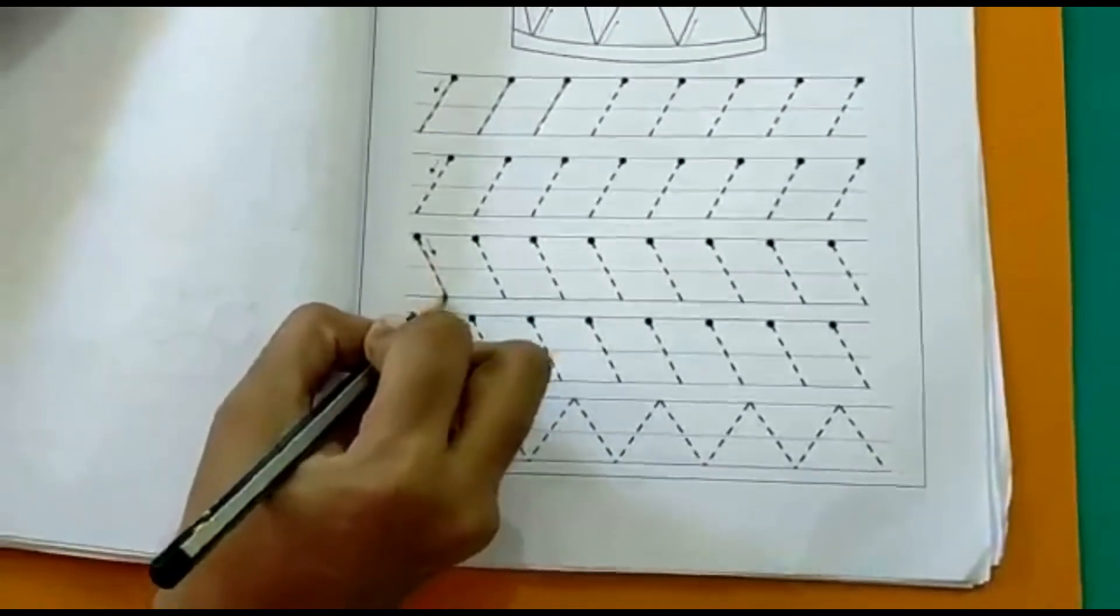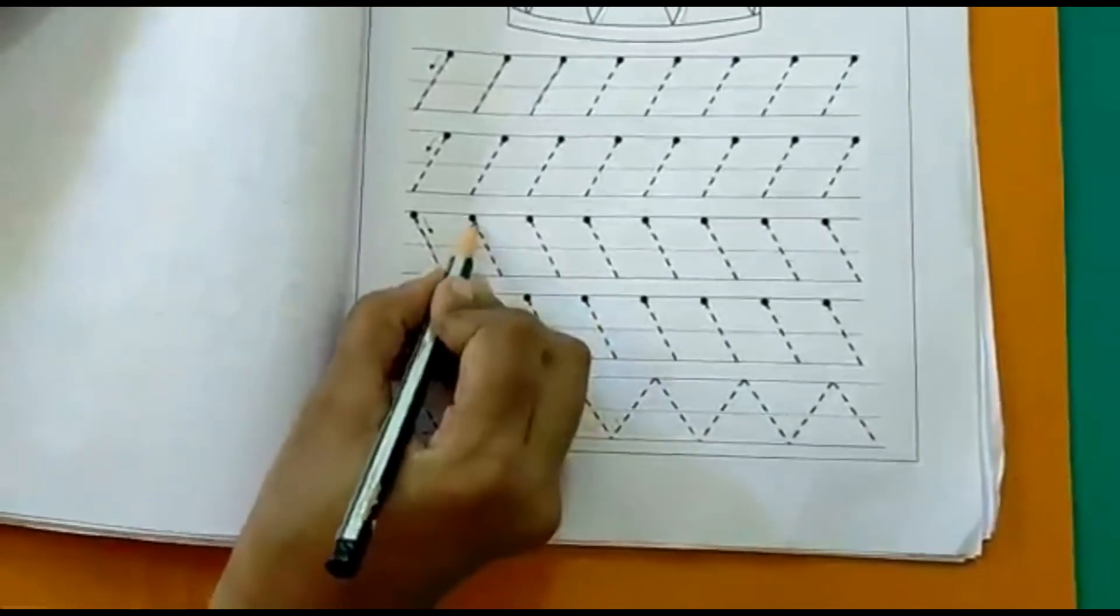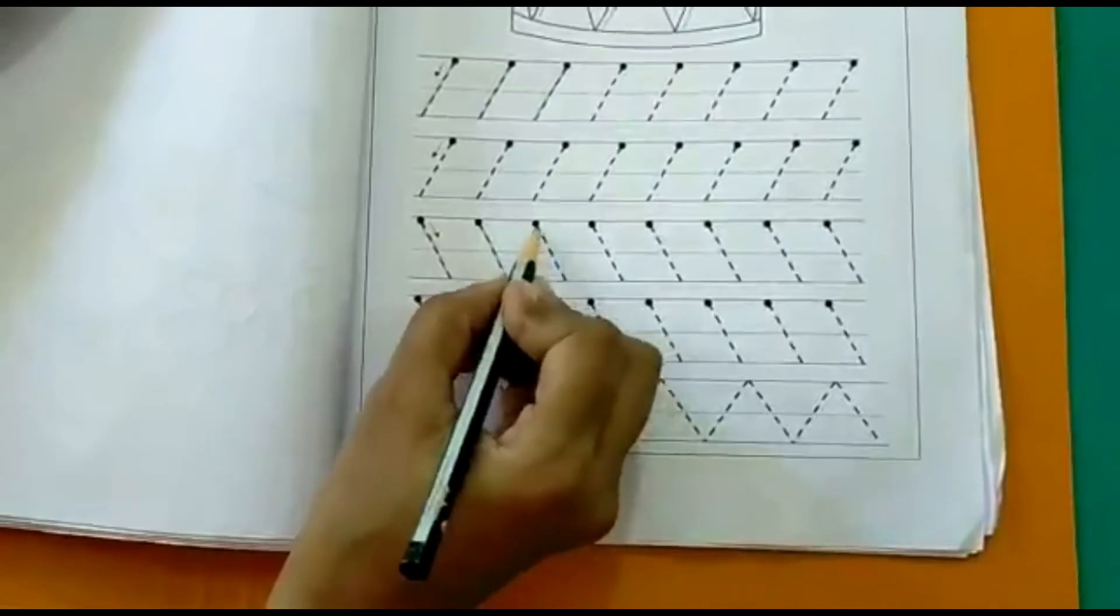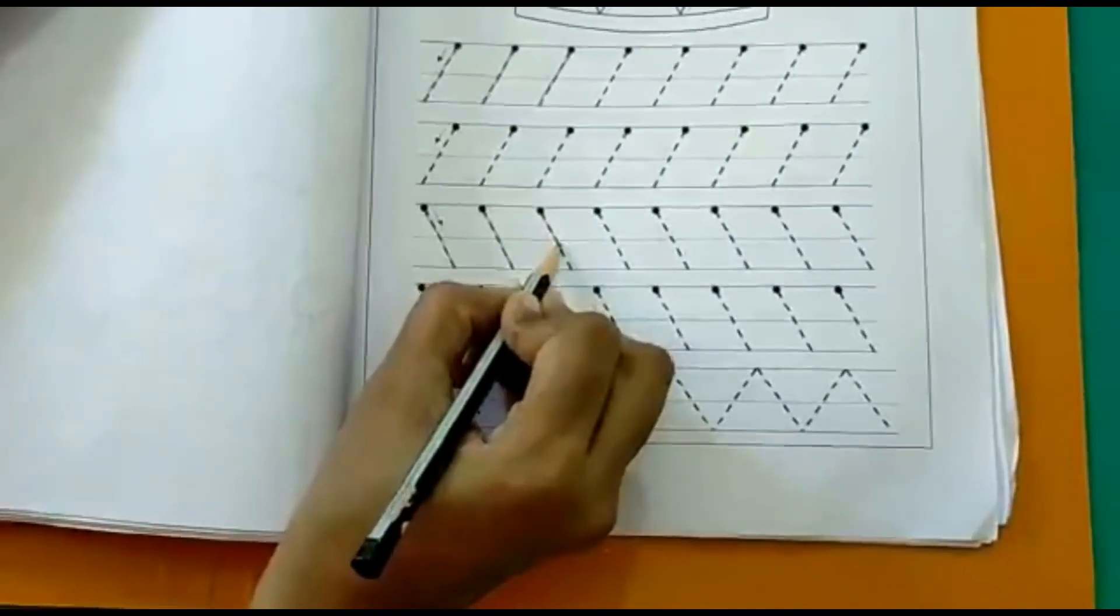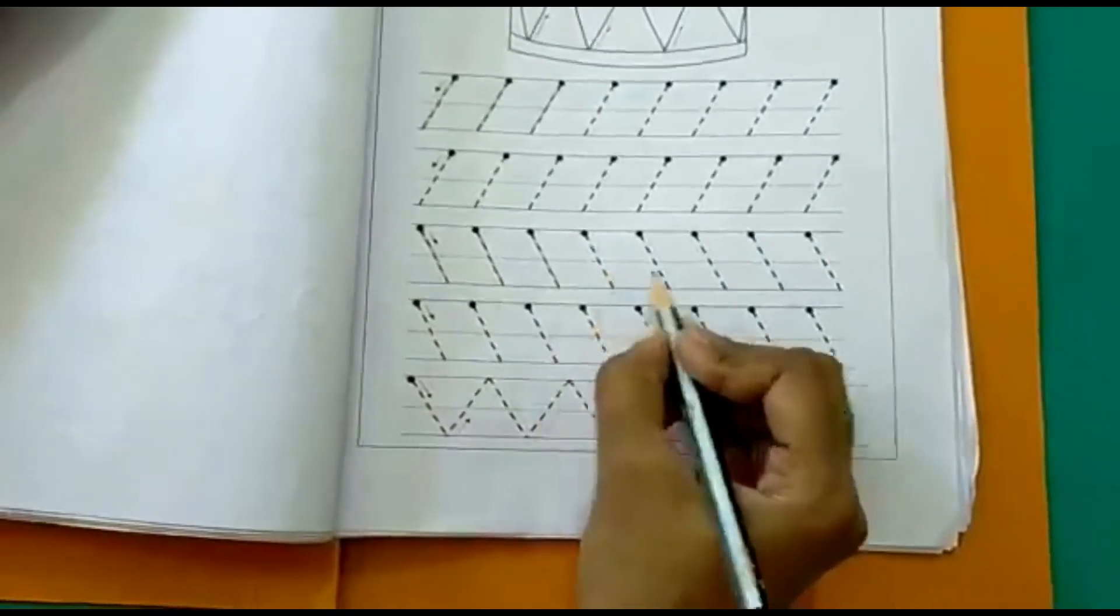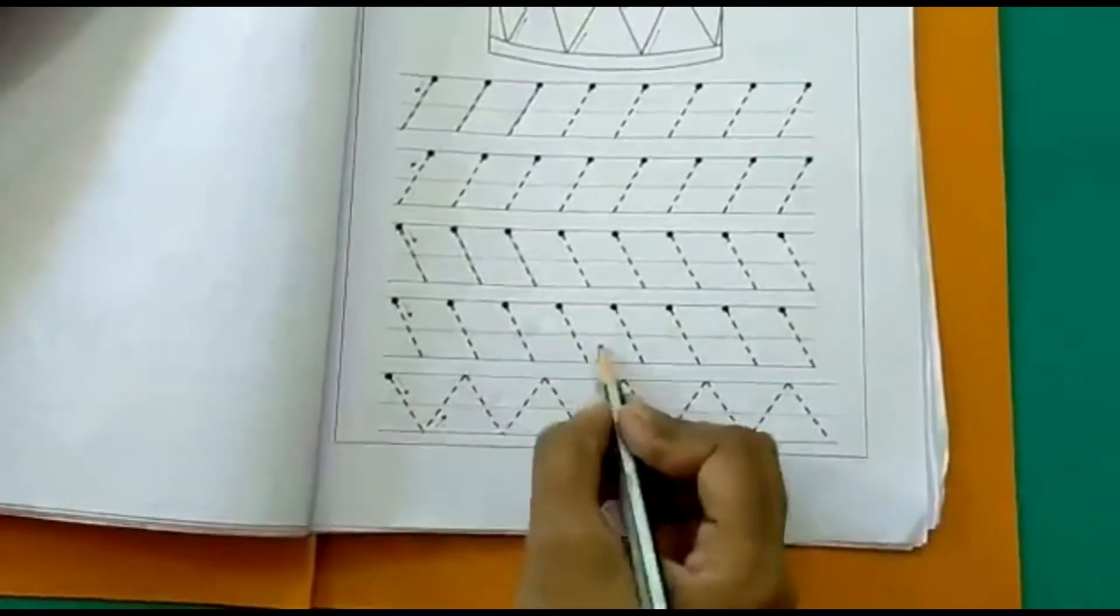Slanting line to the right. Slanting line to the right. In the same way, you have to trace the remaining slanting lines.